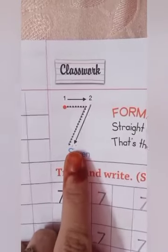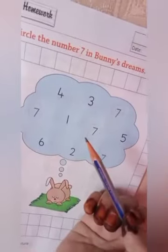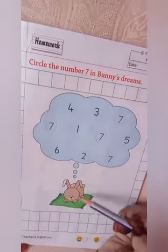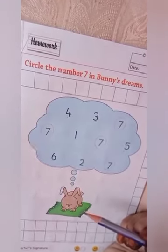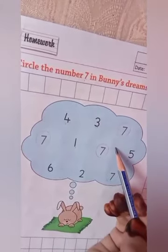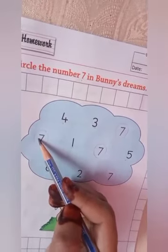In our previous video, which number had we written? Yes, seven! Now we will do the activity of number seven on this page. Our topic is: circle the number seven in Bunny's dream. Students, what do we have to do here? We have to circle number seven in Bunny's dream. We will only circle the number seven.